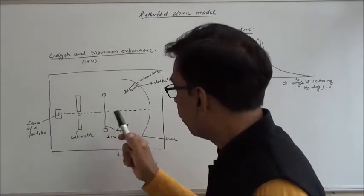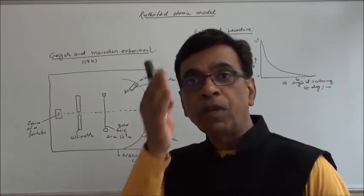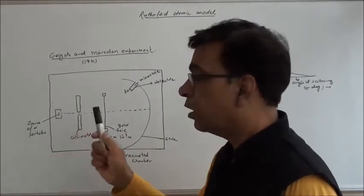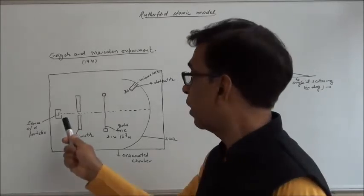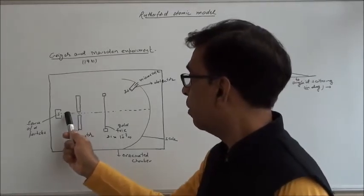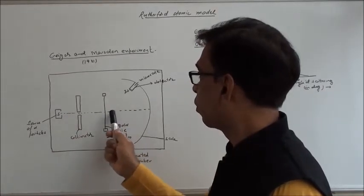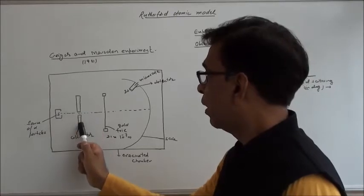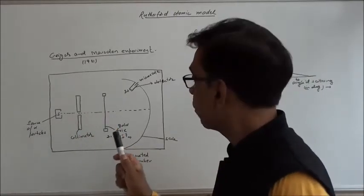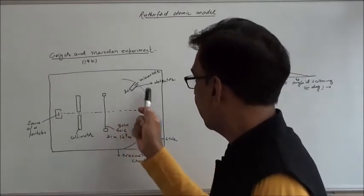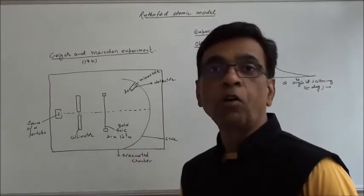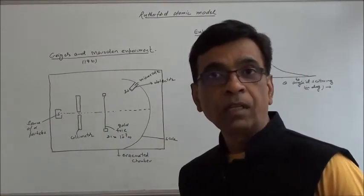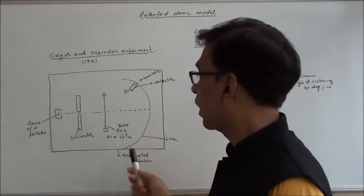The purpose of taking a very thin gold foil is to avoid multiple collisions, so in a way we have taken a single layer of atoms so that there are no multiple collisions. Lead has been taken because of its high absorbing power, so that alpha particles moving in other directions will be absorbed and only the fine beam will be allowed to fall on the foil. The entire setup is in an evacuated chamber — no other particles present to avoid collisions of alpha particles with air molecules.